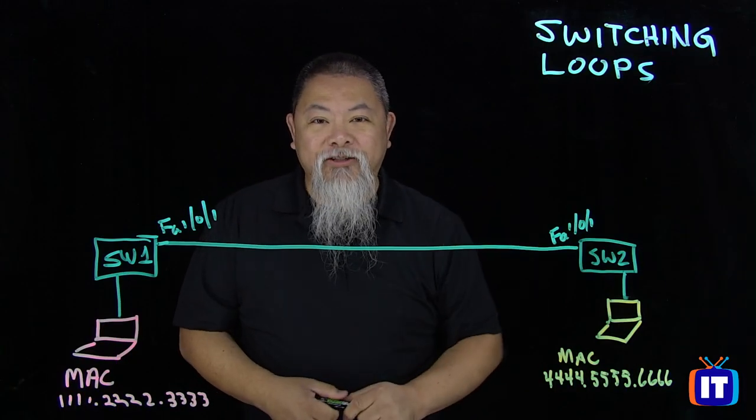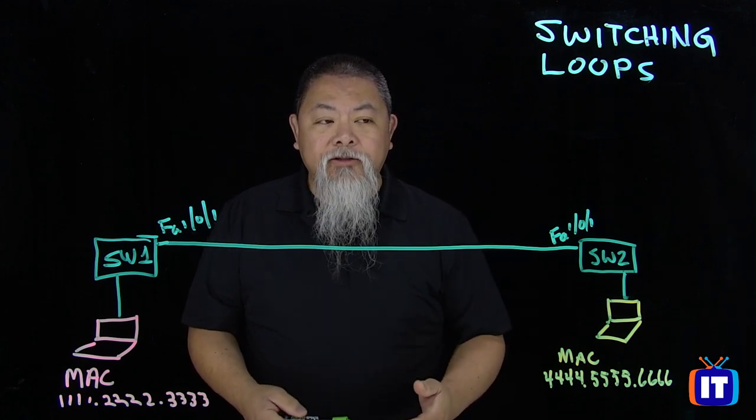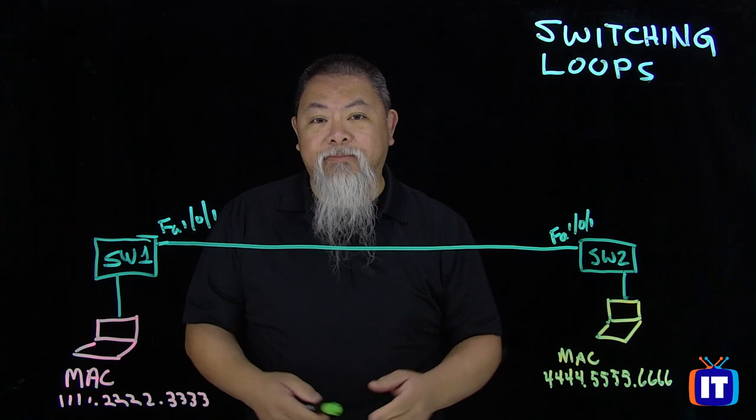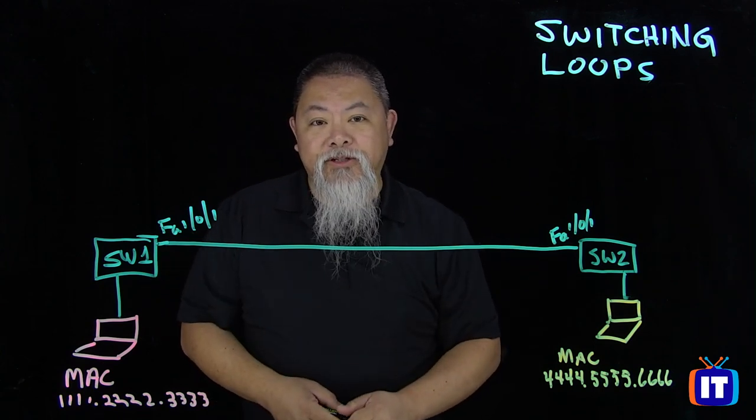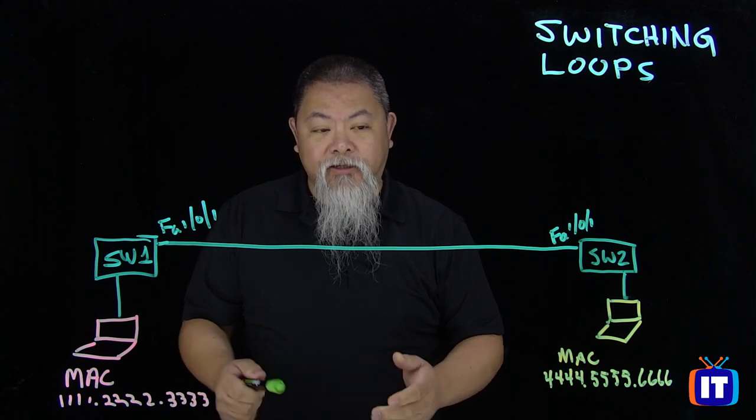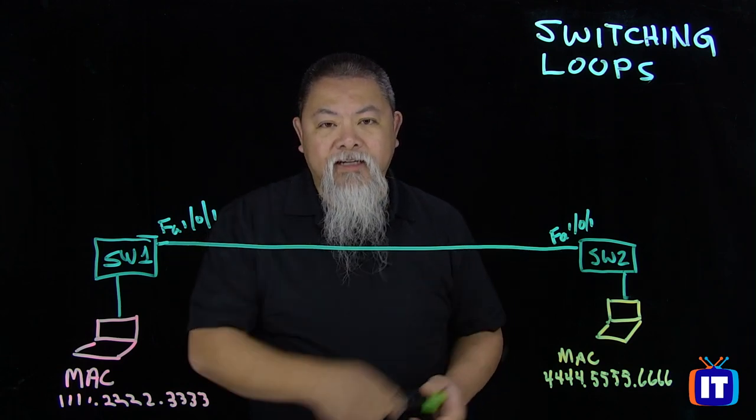Alright, so let's address the idea of switching loops here. Now switching loops normally occur when we're working with multiple switches. So for example, in my topology, I have two particular switches that I'm working with. But I'm not going to really have to worry about switching loops here, because I only have a single link in between.